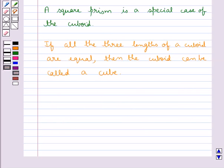So we say that a cube is a special case of a square prism.